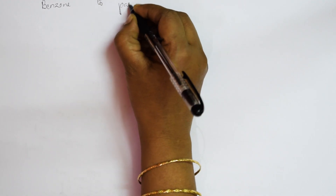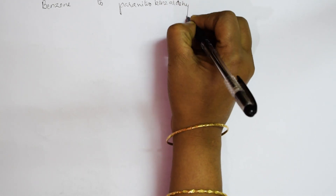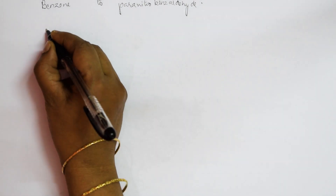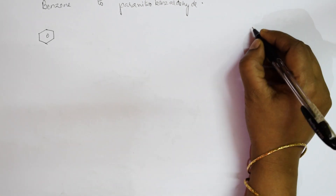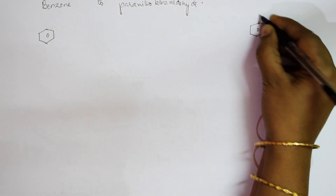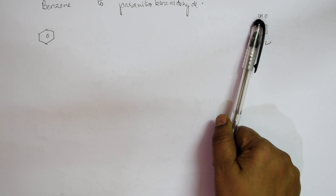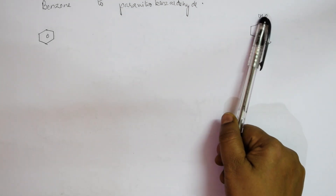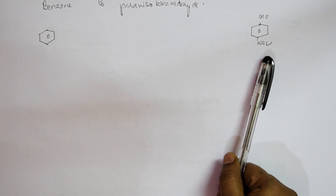Next conversion: benzene to para-nitrobenzaldehyde. I have a benzene ring with a benzaldehyde group (CHO) and NO2 at the para position. I need to add this carbon-containing group and then add the nitro group.